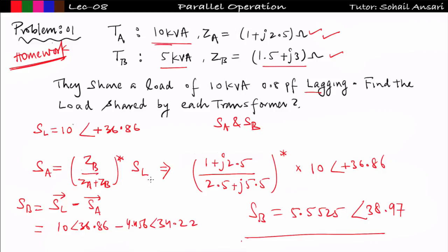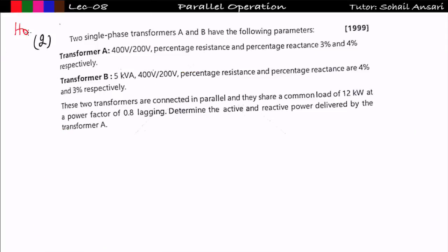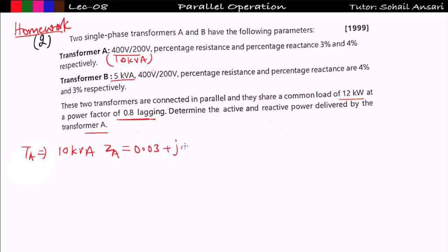Now see the second homework problem. Two single-phase transformers A and B have the following parameters. Transformer A: rating 10 kVA, 400/200 V, resistance per unit 3% and reactance 4%. Transformer B: rating 5 kVA, resistance per unit 4% and reactance 3%. The two transformers are connected in parallel supplying a common load of 12 kilowatts at 0.8 power factor lagging. We need to determine the active and reactive power delivered by transformer A. Here Za = 0.03 + j0.04 pu and Zb = 0.04 + j0.03 pu, both in per unit.